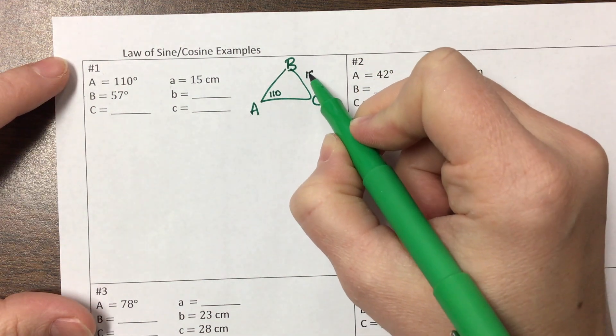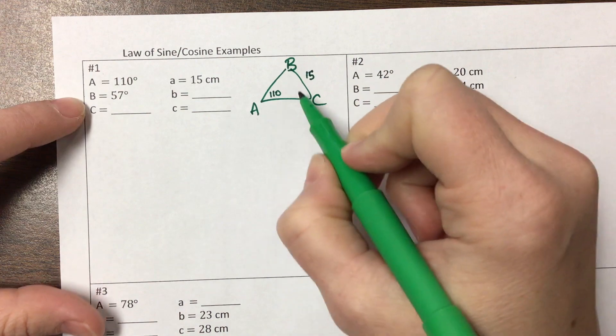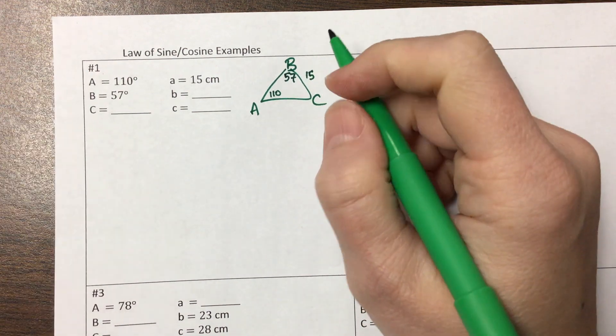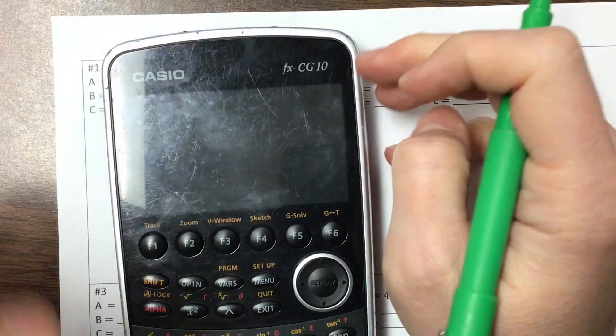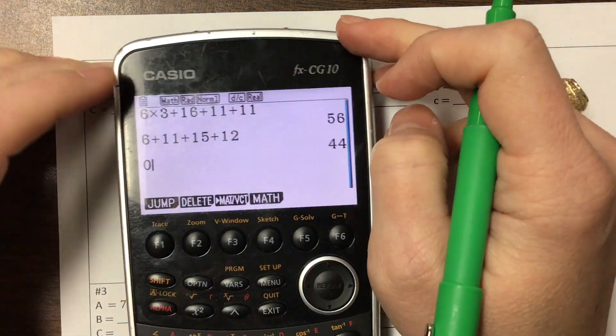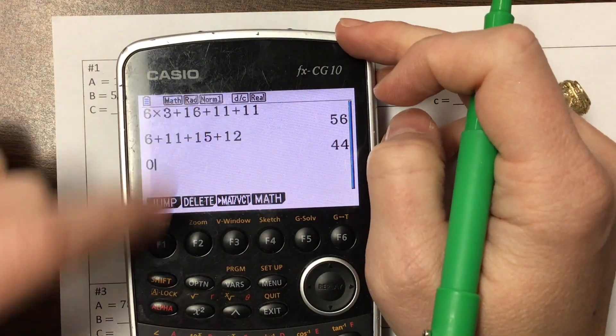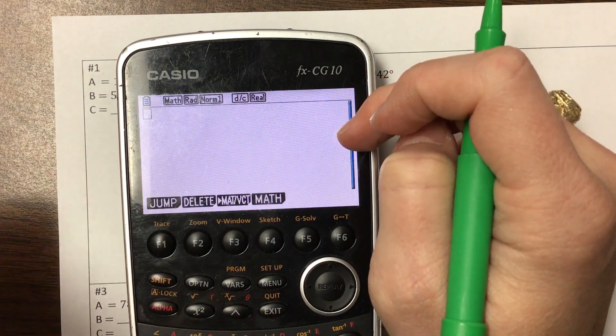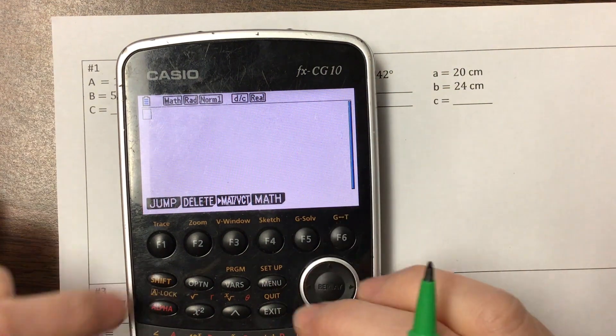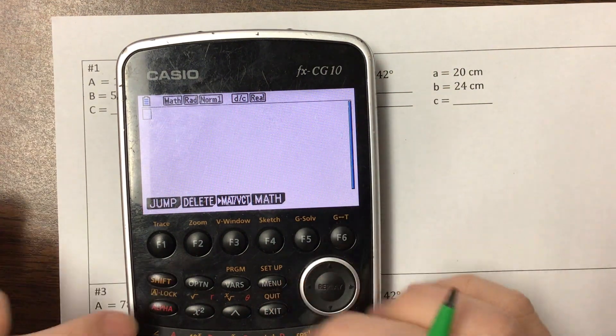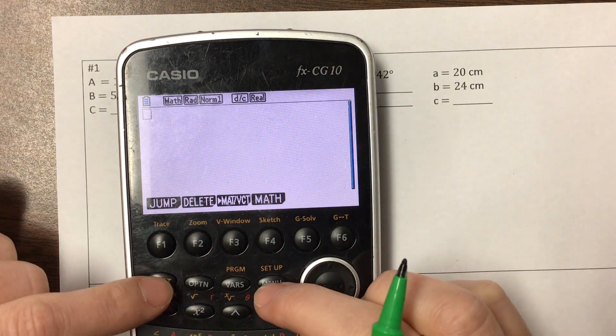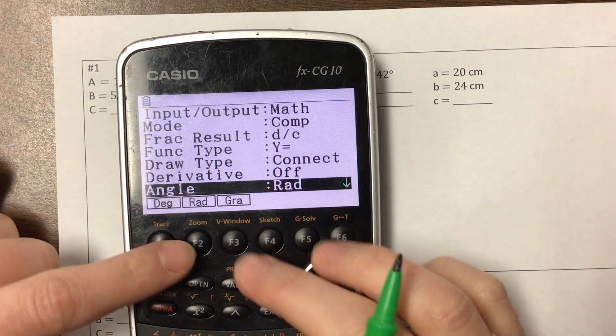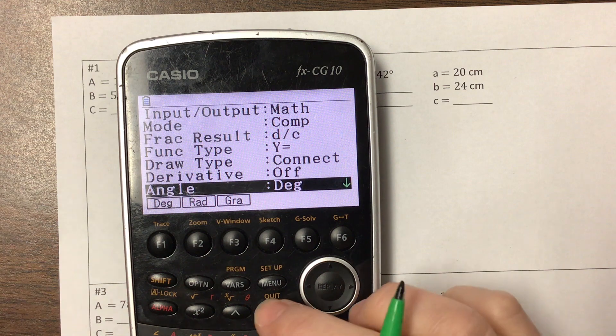Little a is always across from big A and then angle B is 57. So the first thing that I want to do as I get started on these, I need to make sure that my calculator is in degrees. So if you're using the Casio, I'm not going to tell you how to do this during the test and I'm not going to remind you, so it's important that you do it. Go to setup and then down to angle, you want to choose degrees.